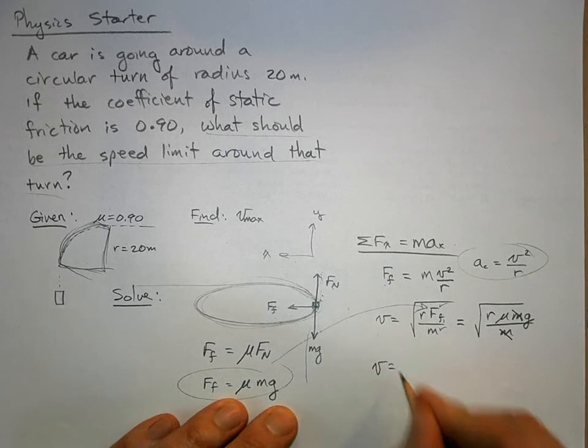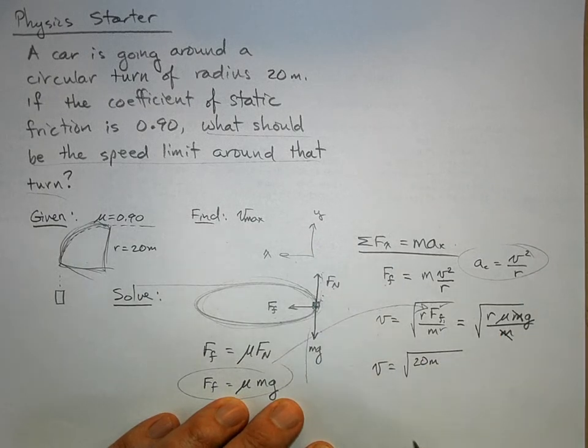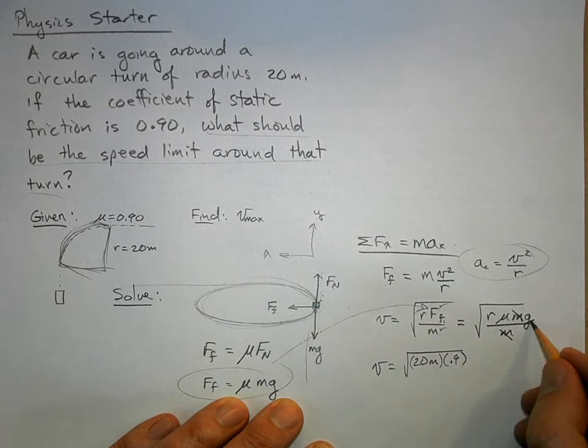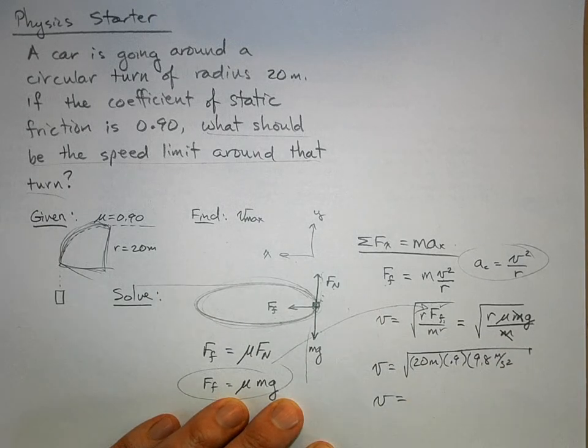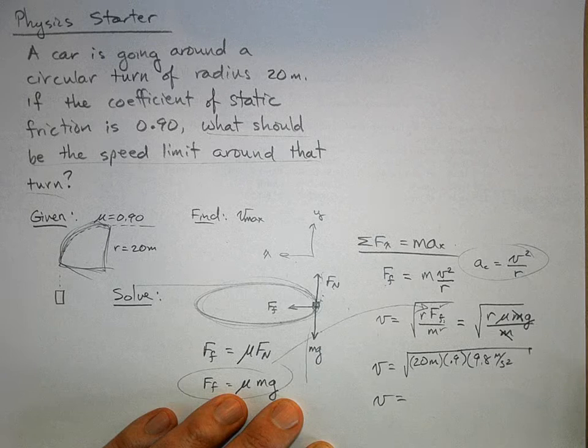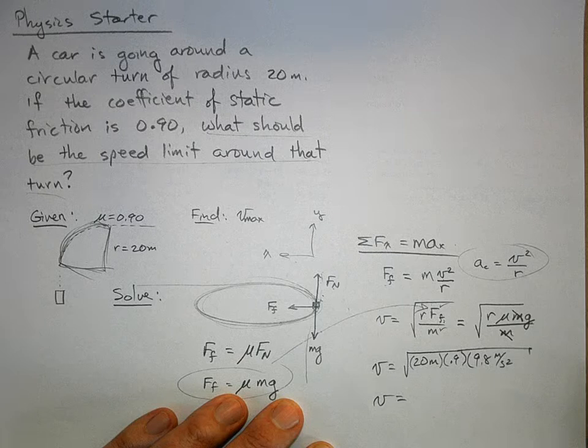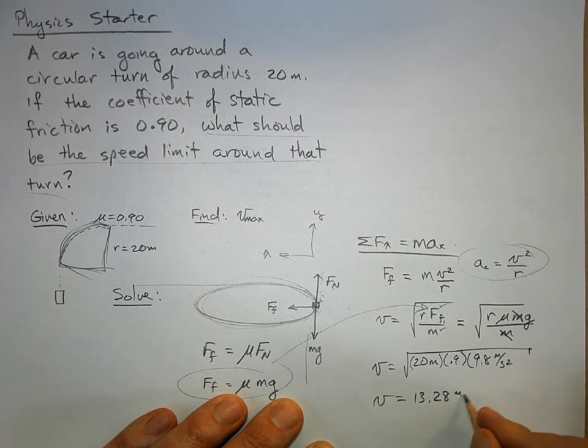Now we can plug in our values. This is 20 meters, mu is 0.9, and g is 9.8 meters per second squared. Get out the calculator. I take the square root of 20 times 0.9 times 9.8, and you get 13.28 meters per second.